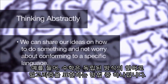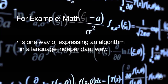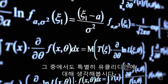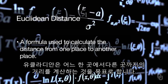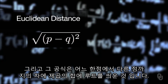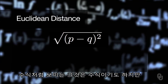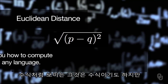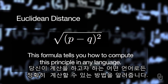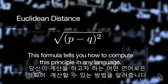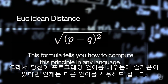Math is one way of expressing an algorithm in a language-independent manner. Consider, for example, Euclidean distance — that is, calculating the distance from one place to another. The formula is that if you're trying to take the distance from one point to another, you take the square root of the sum of the squared differences between the two. That looks like a formula, but it also tells you exactly how you can compute it in any language — you could do that in SNAP or any other programming language.